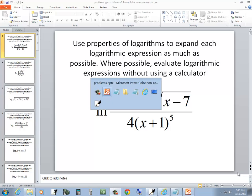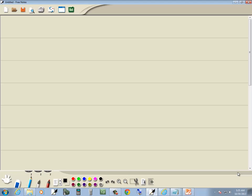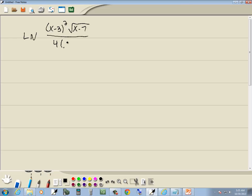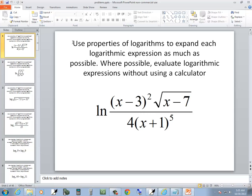Let's take a look at this problem. We have natural log of x minus 3 squared, square root of x minus 7, all over 4 times x plus 1 to the fifth.